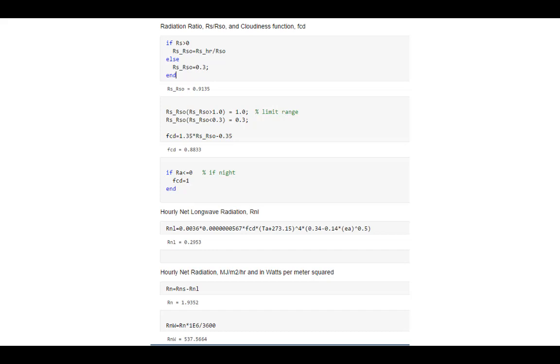And then finally, we can calculate the net longwave radiation. You see a formula that's got the Stefan-Boltzmann constant in it, it's got the temperature of the air, it's got the vapor pressure, again, very similar to the daily calculation. And we see that the net longwave turned out to be 0.2953, so pretty small in comparison to the net shortwave. So we're finally able to do the calculation. Recall that the net shortwave was greater than 2, so when we subtract 0.2 from it, it goes down to 1.935. Often I like to convert that to watts per meter squared, so that's what you see there at the very bottom of the screen, a conversion to watts per meter squared, 537 watts per meter squared of net radiation. That's quite a bit of energy that can be used to heat the soil, evaporate water, heat the air, cool the air, whatever.